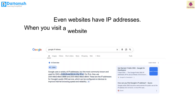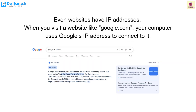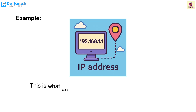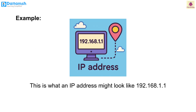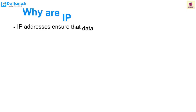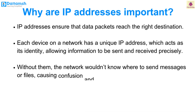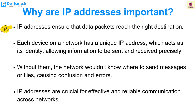Even websites have IP addresses. When you visit a website like google.com, your computer uses Google's IP address to connect to it. This is what an IP address might look like — you usually don't see it because your computer translates the website name into a numerical address behind the scenes. IP addresses ensure that data packets reach the right destination.